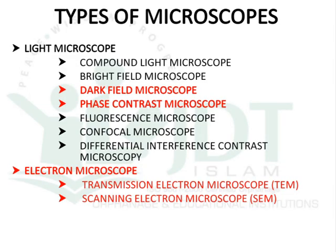There are many classes of microscope, mainly classified according to the source of light or electrons. According to the light source, it is classified as a light microscope, which is further classified into compound light microscope, bright field microscope, dark field microscope, phase contrast microscope, fluorescent microscope, confocal microscope, and differential interference contrast microscope. If the source is electron beams, it is known as an electron microscope, classified into transmission electron microscope and scanning electron microscope. In the third semester syllabus, we study dark field microscope, phase contrast microscope, and electron microscope in detail.